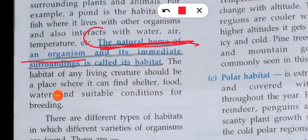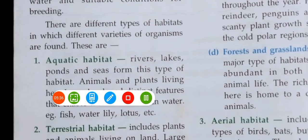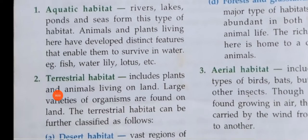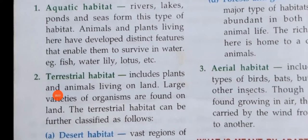The habitat of any living creature should be a place where it can find shelter, food, water, and suitable conditions for breeding — because if it cannot breed, after a particular species is gone, it will disappear. Different types of habitats include aquatic habitats: rivers, lakes, and ponds. Animals and plants living in aquatic habitats have adapted distinct features which help them in the water, such as fish, water lily, and lotus.